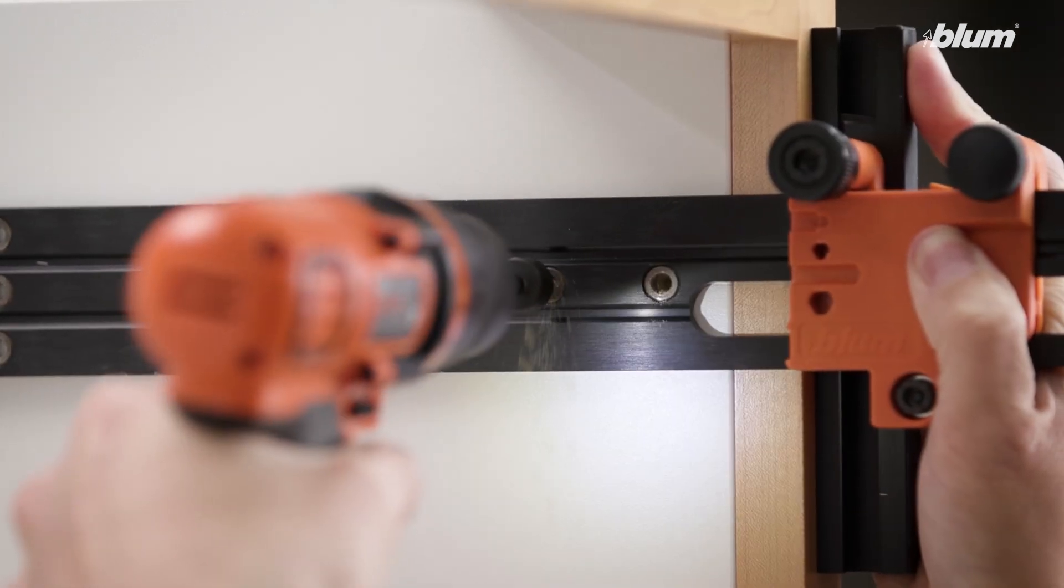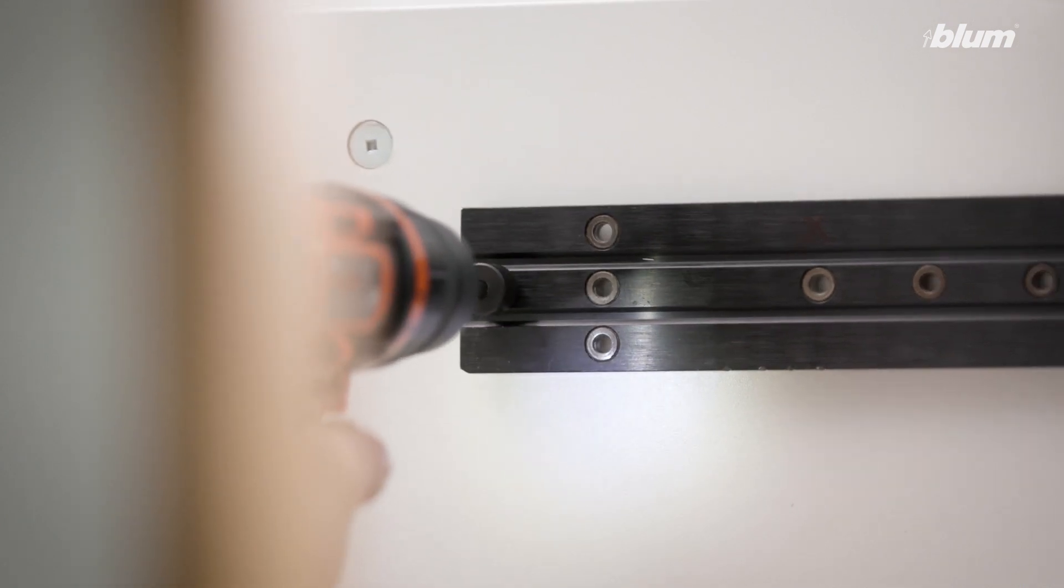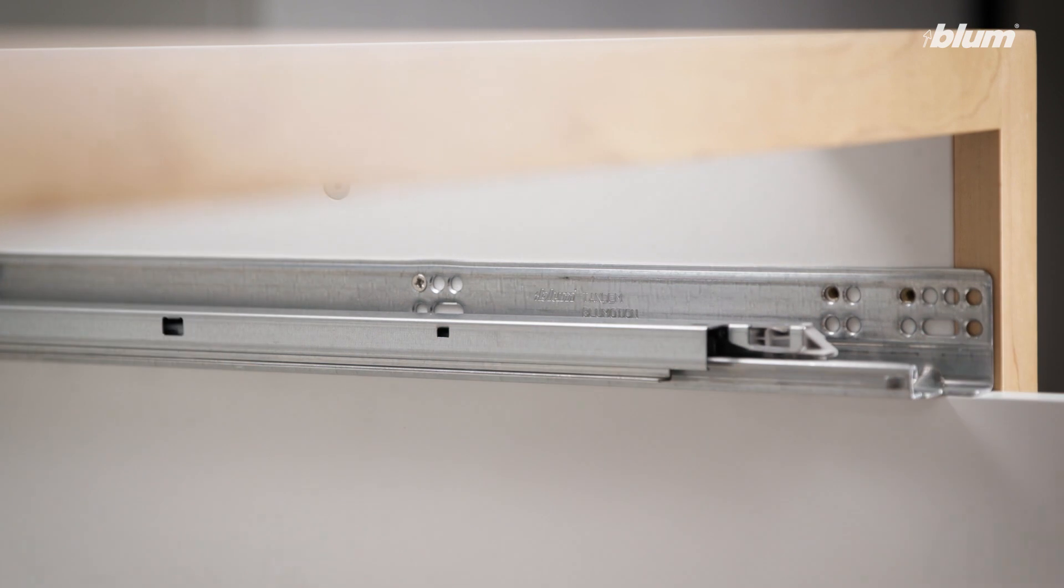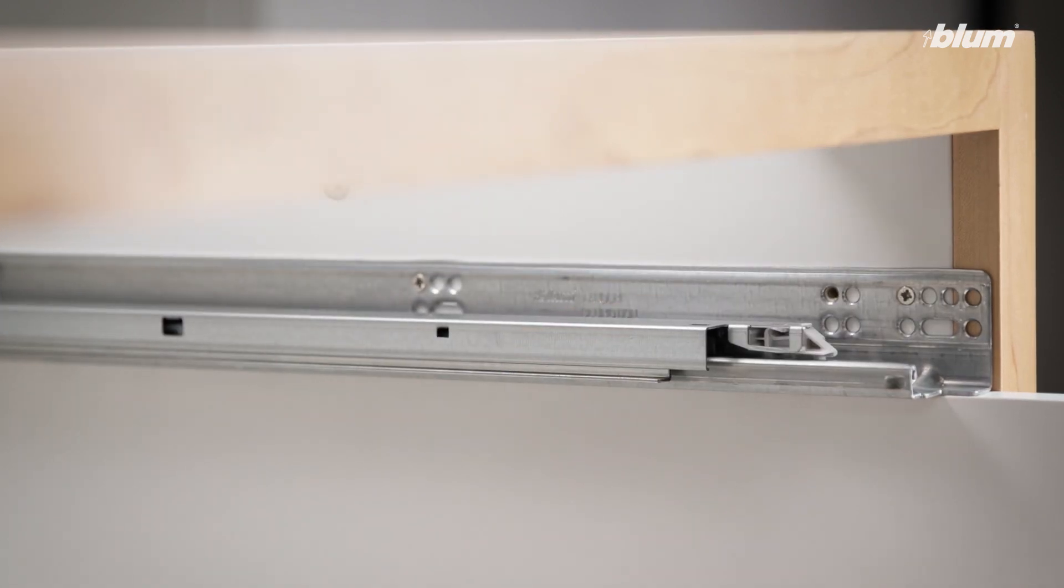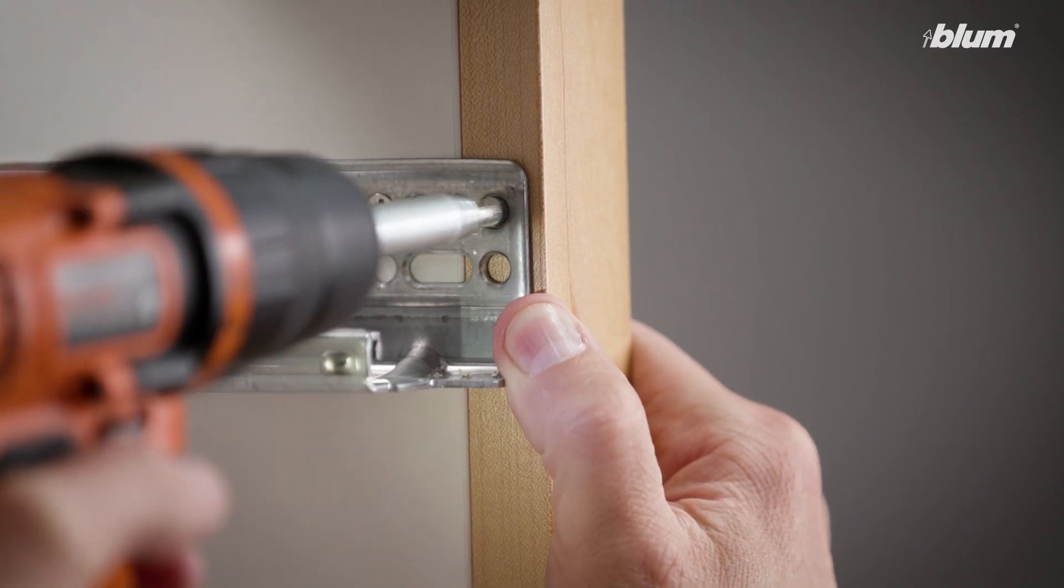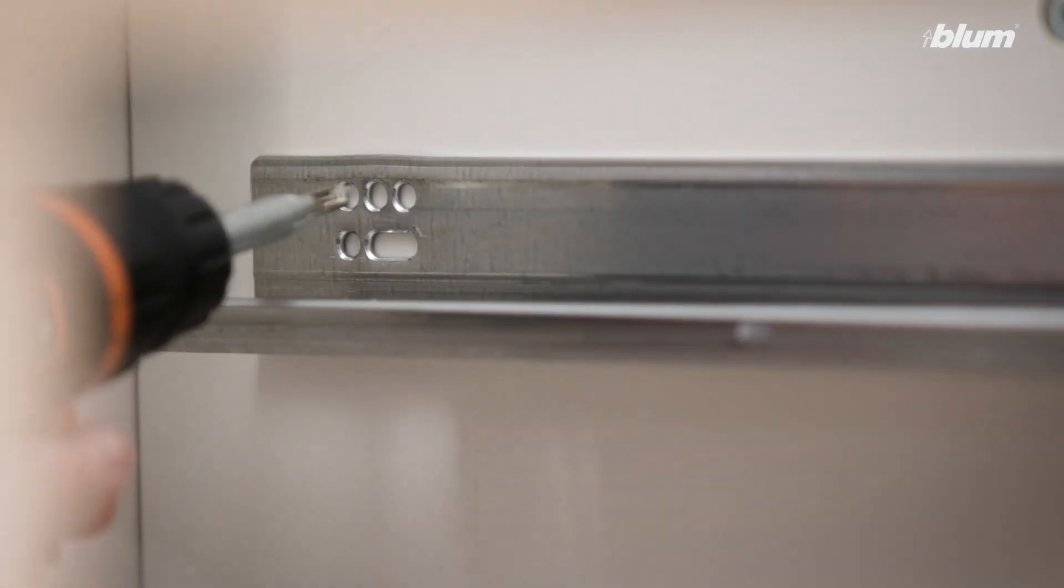This is where the hole locations will be if the runner is set back to three millimeters or 1 eighth inch, which is typical for overlay applications. Then, run screws to secure the runner to the cabinet. We are using number six head system screws. However, you could use number six by five eighths flathead wood screws. To ensure we have enough holding strength to meet the load capacity of the runner, we recommend running screws at all of these locations.